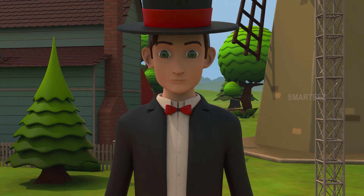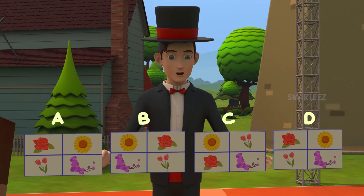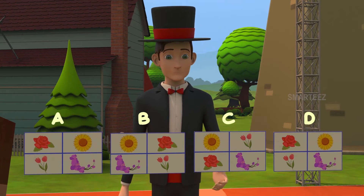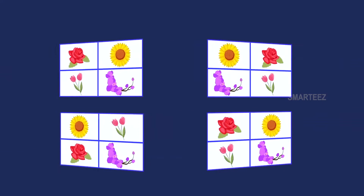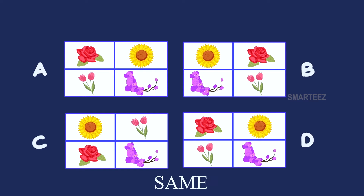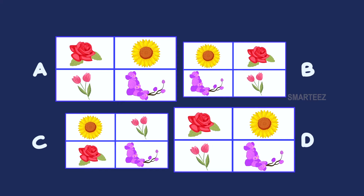Is it B and C? No, that's not right either. Try again. It's A and D. You got that right. Let's give a big round of applause. Let's look at the two pictures which are the same. You can see the four flowers — red rose, sunflower, pink tulip and purple orchid — in the same order between pictures A and D. So those are the only two pictures that are exactly the same. We call them identical.